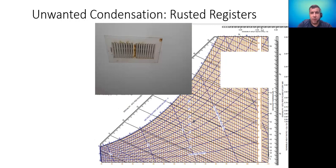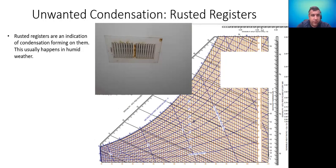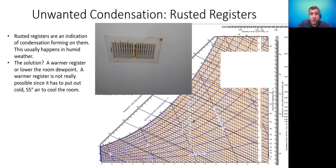Another unwanted condensation problem: rusted registers. We see this a lot in the south. Rust forming on a register or condensation droplets on a ceiling register are indications of condensation. This usually happens during humid summer weather. The solution is to either raise the register temperature above the dew point or lower the room dew point. However, a warmer register isn't really possible because we need to supply 55-degree air to properly cool the room. So the only other option is to lower the room's dew point.